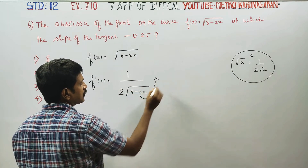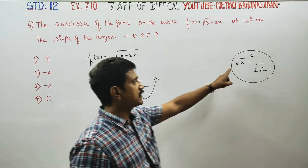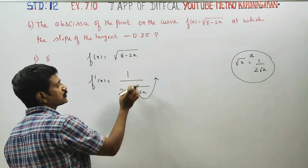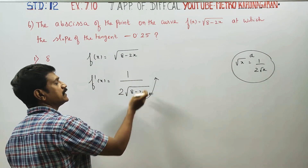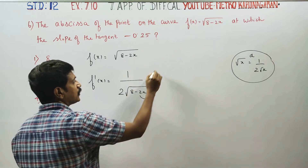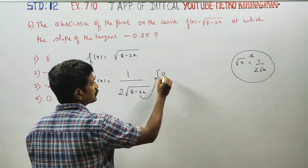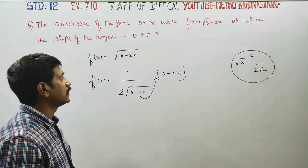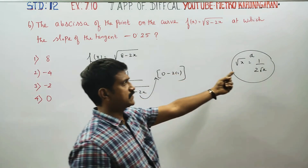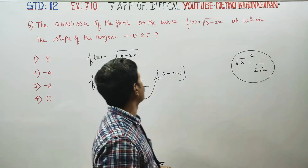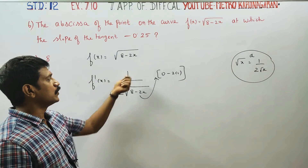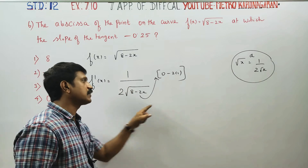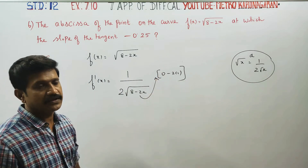Again, chain rule applies. If you have to differentiate root of 8 minus 2x, using the chain rule, the derivative of the outer function gives 1 by 2 root of 8 minus 2x, and then we differentiate the inner function. Since 8 is a constant its derivative is 0, and minus 2 times x differentiates to minus 2. It's called chain rule.